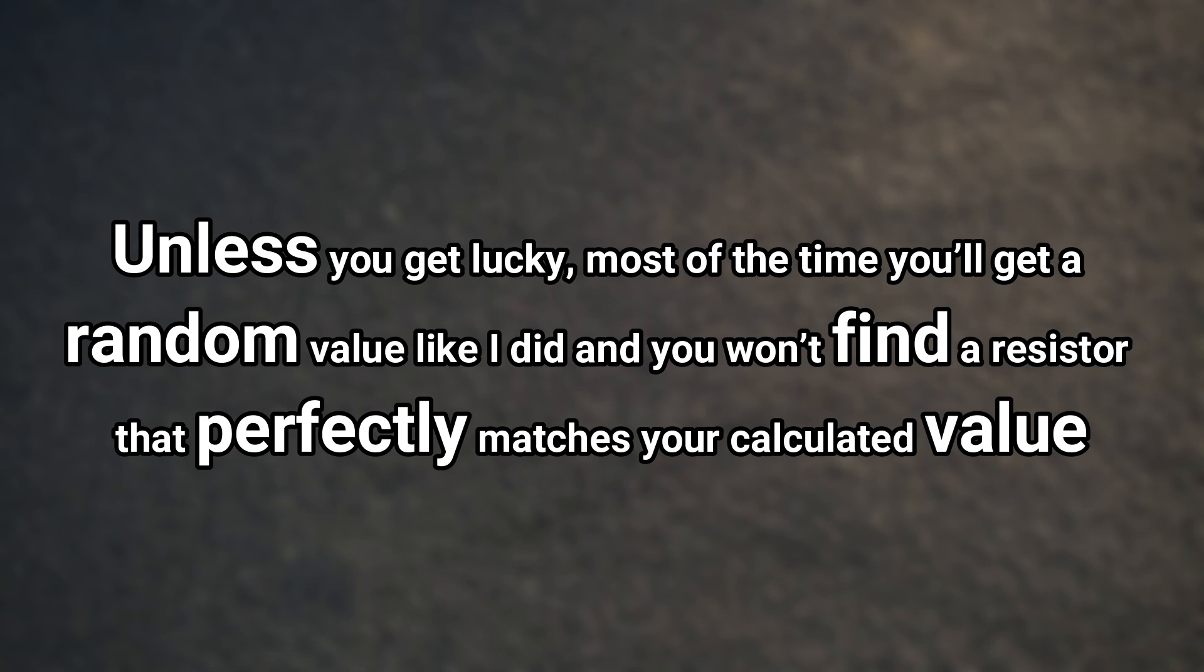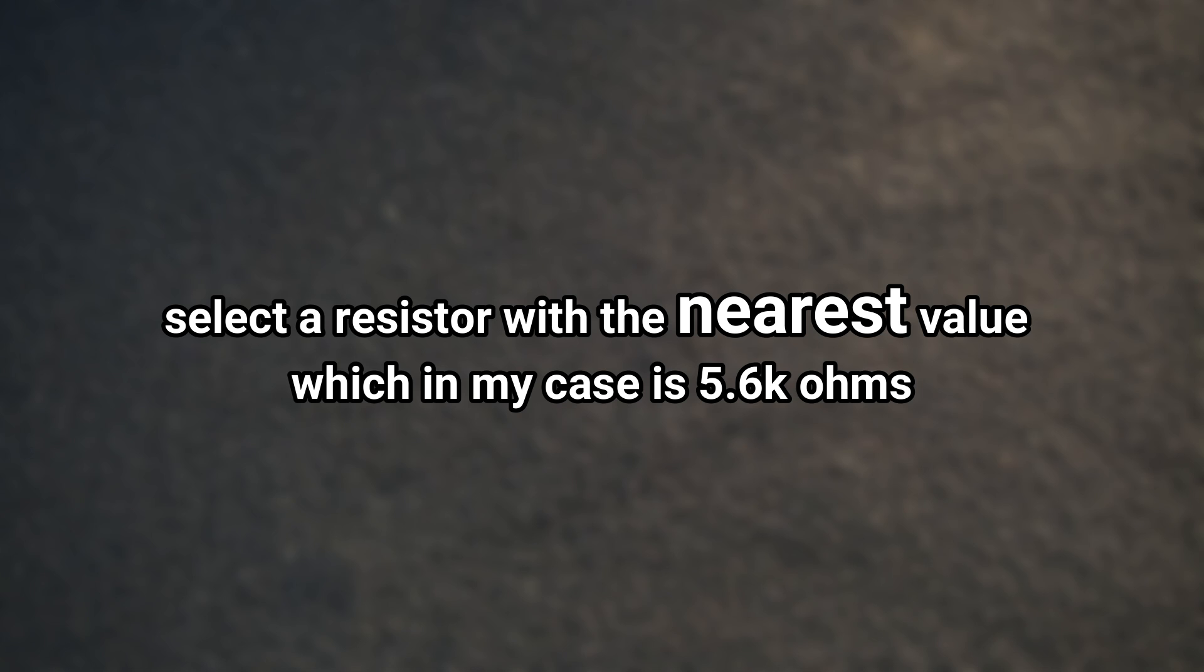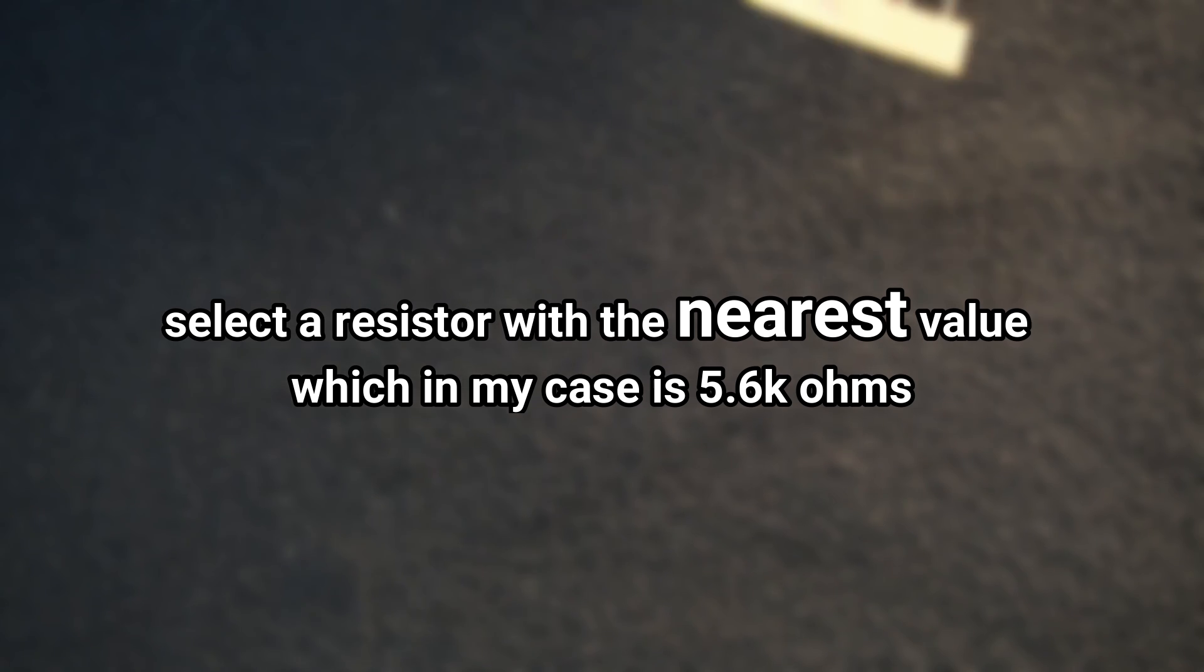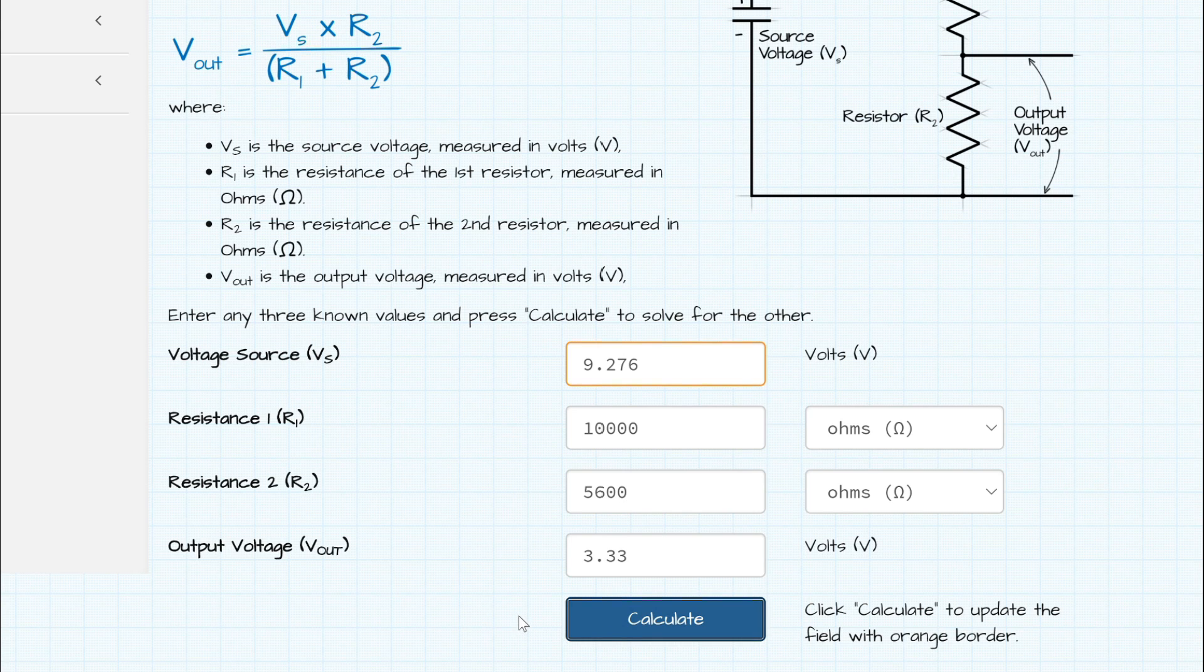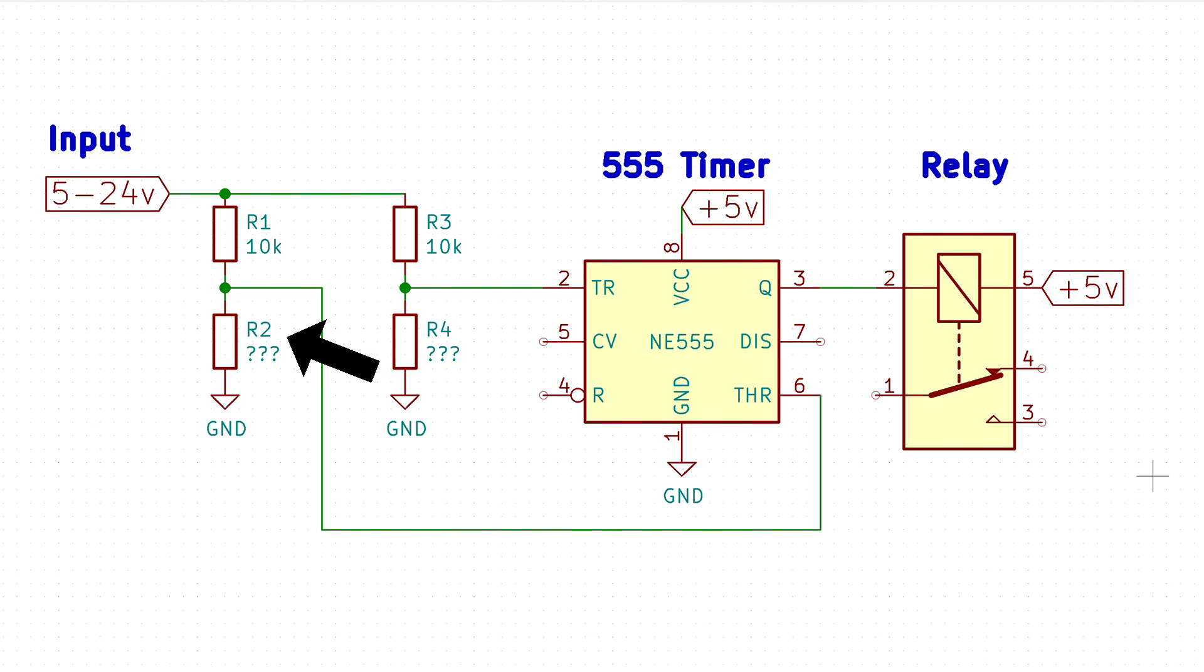Now unless you get lucky, most of the time you'll get a random value like I did and you won't find a resistor that perfectly matches your calculated value. So in this case just select a resistor with the nearest value, which in my example is 5,600 ohms. Since I'm using a slightly lower value resistor than calculated, this will mean my switch on voltage will be 9.27 volts, but that's near enough for my application. So now I know that the resistor value for R2 is 5,600 ohms.